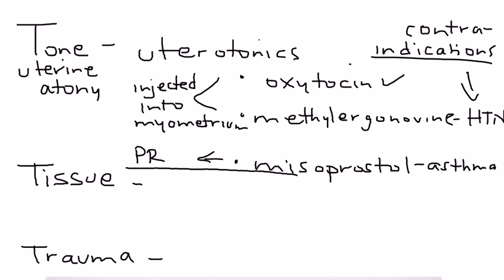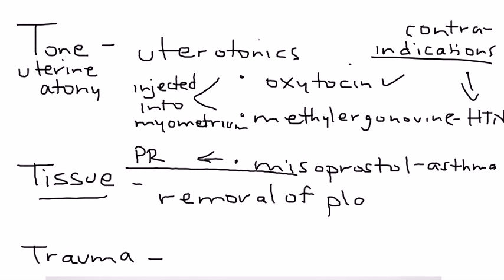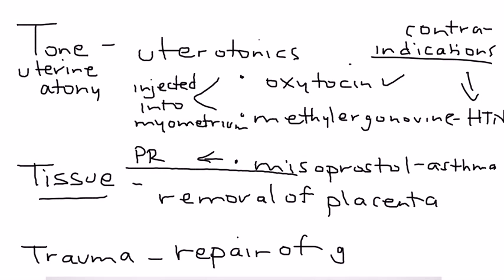If a woman has a retained placenta, you need to manually remove it. If trauma was the cause of the postpartum hemorrhage, then you need to repair any genital lacerations that are associated.